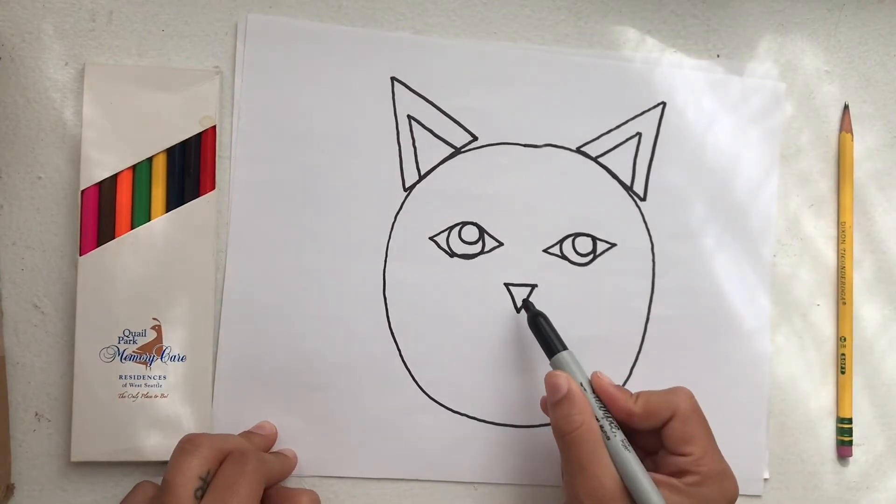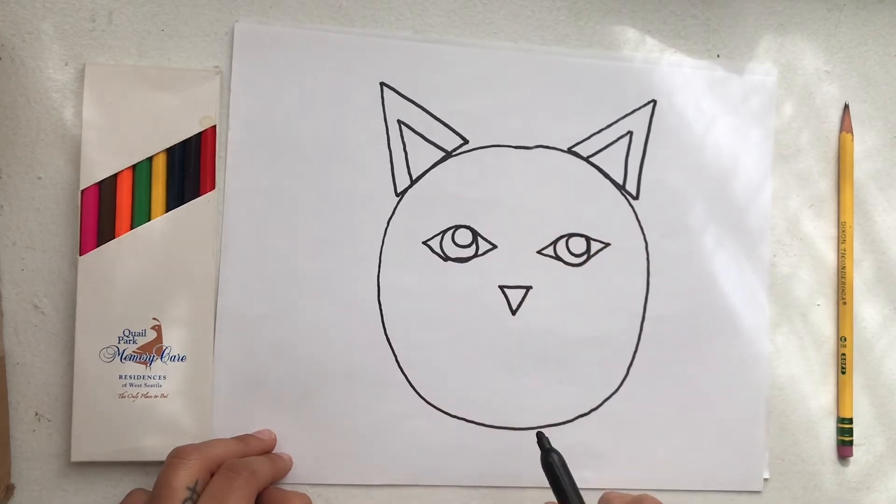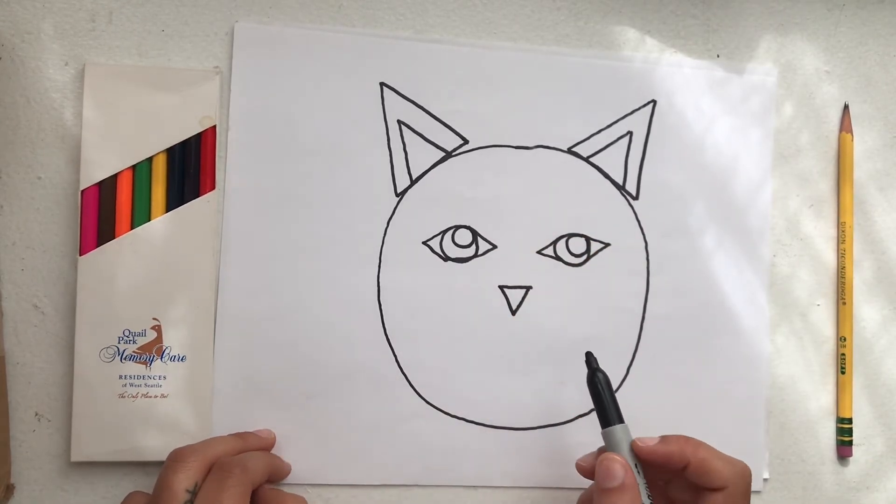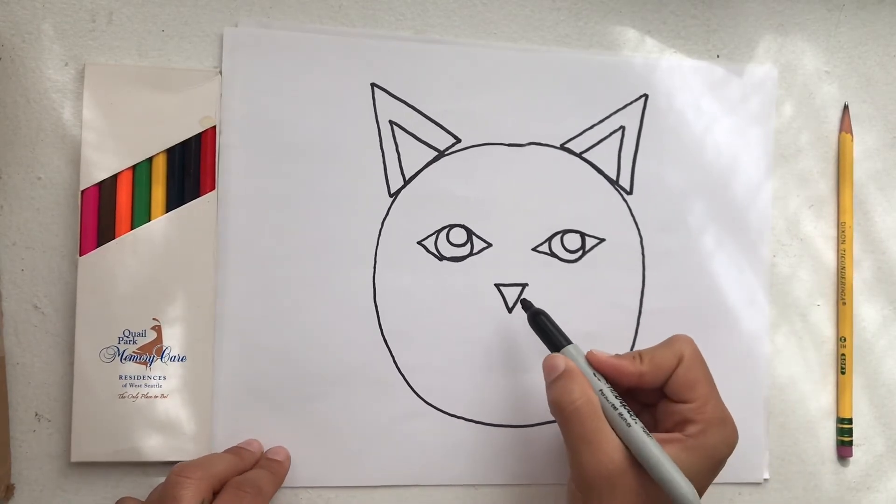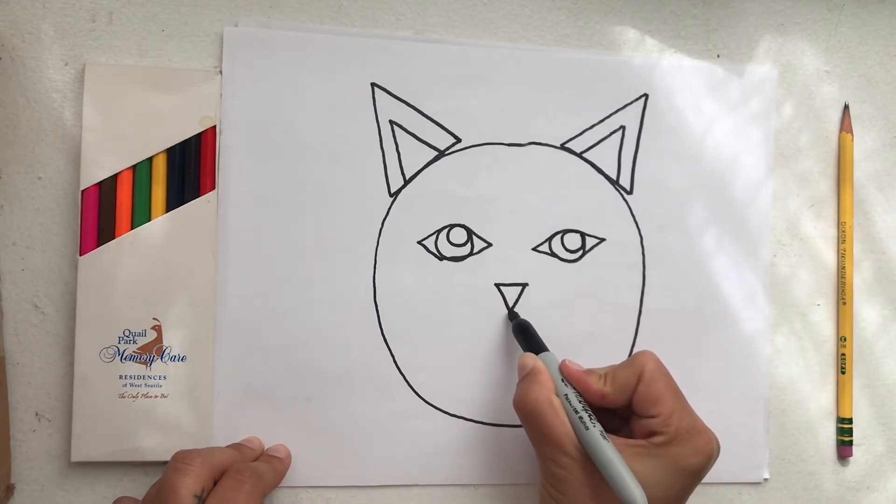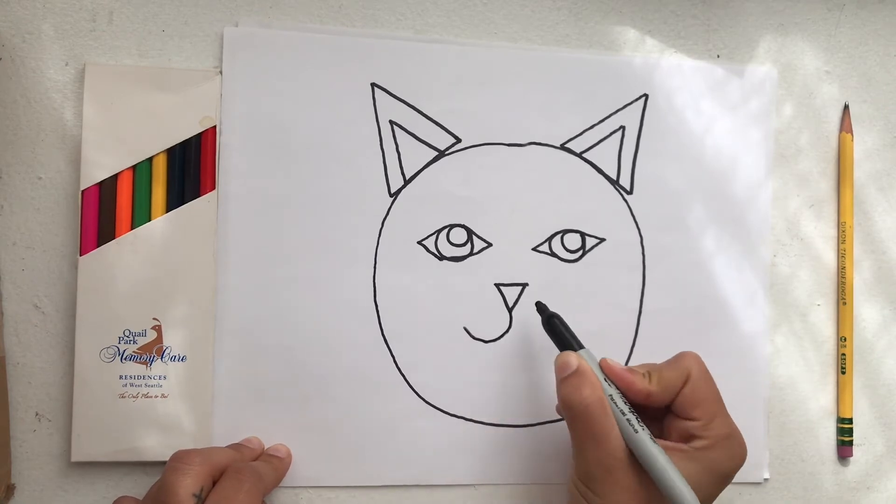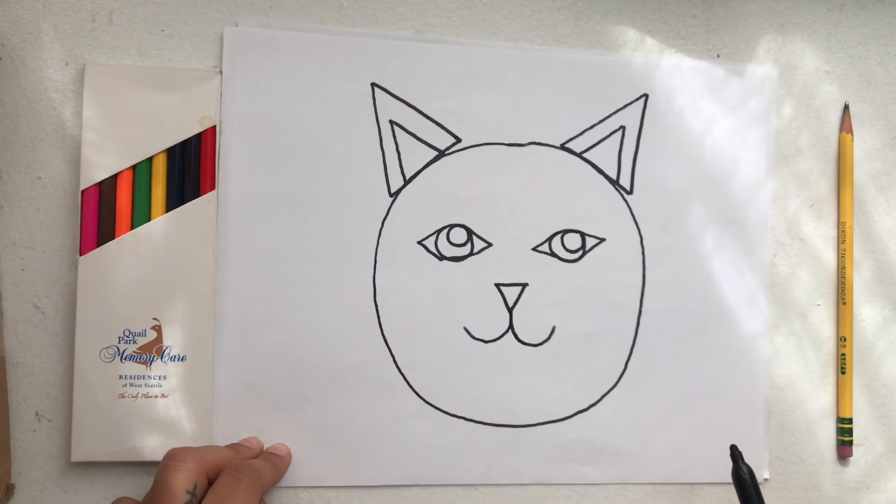Underneath my nose I'm going to do two swoop shapes. That's going to be my mouth. It's kind of the shape of a hook or a swoosh. I start at the very tip of my nose in the middle and I do swoosh on one side and swoosh on the other side just like that.